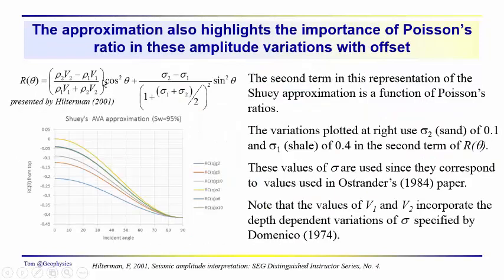The Shuey two-term approximation has this term here, which has the densities and velocities, the impedances, and then it has a term which relies primarily, almost entirely, on the Poisson's ratios of the shale, which would be sigma 1, and the sand, which would be sigma 2.